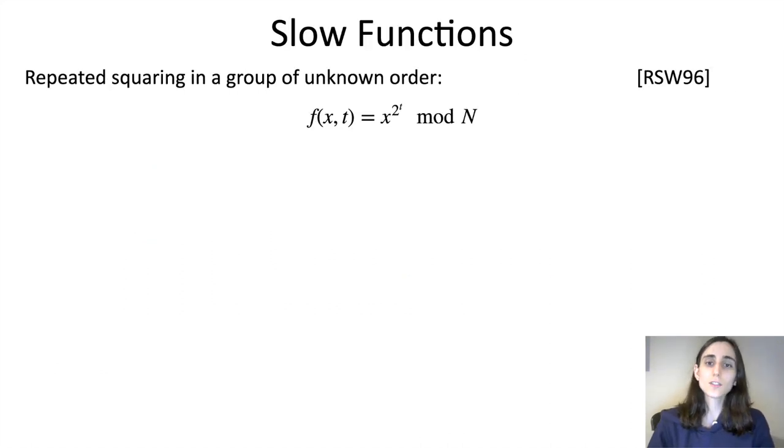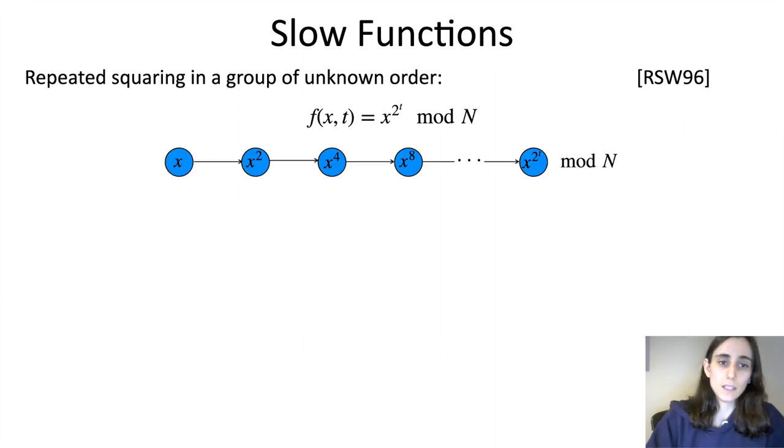The classical notion of a slow function was introduced by Rivest, Shamir, and Wagner in 96, which is repeated squaring in a group of unknown order. The slow function f takes as input a group element x and a time bound t, and computes x to the 2 to the t, mod n, where here n is an RSA modulus.